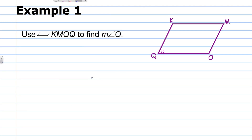Example one: use parallelogram KMOQ to find the measure of angle O. We're given the measure of angle Q and we're being asked to find the measure of angle O. Q and O, as we saw previously, are consecutive angles, which means they are supplementary.